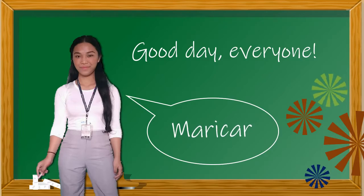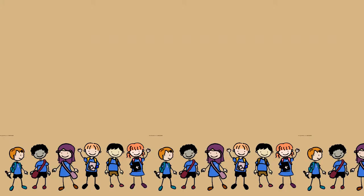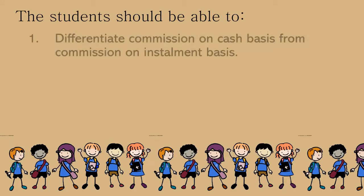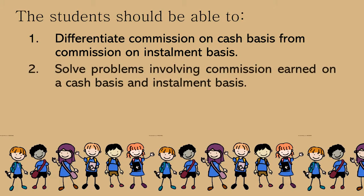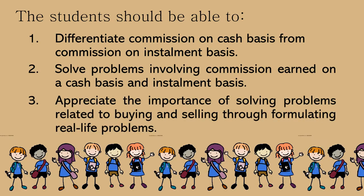I would like to start this lecture with today's lesson objectives. At the end of the lesson, the student should be able to: 1. Differentiate commission on cash basis from commission on installment basis. 2. Solve problems involving commission earned on a cash basis and installment basis. 3. Appreciate the importance of solving problems related to buying and selling through formulating real-life problems.